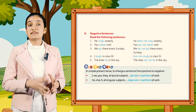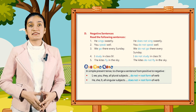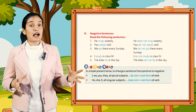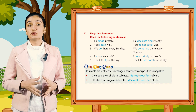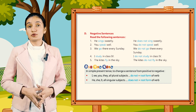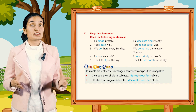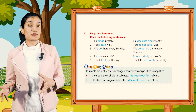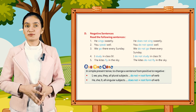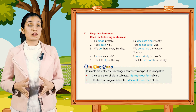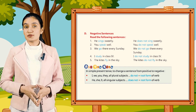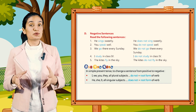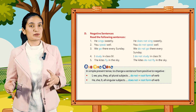Now kids, did you know — in simple present tense, to change a sentence from positive to negative: for I, we, you, they, and all plural subjects, use 'do not' plus the root form of the verb. For he, she, it, and all singular subjects, use 'does not' plus the root form of the verb.